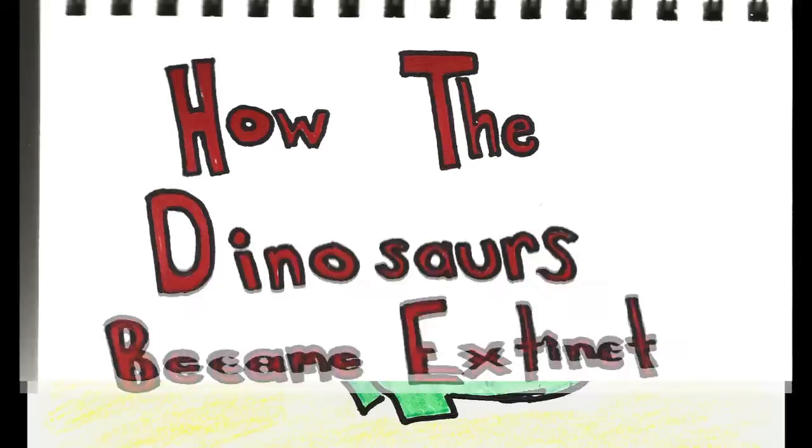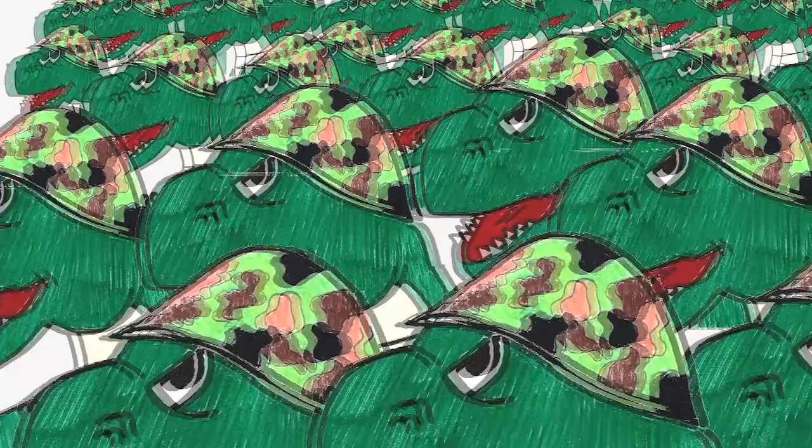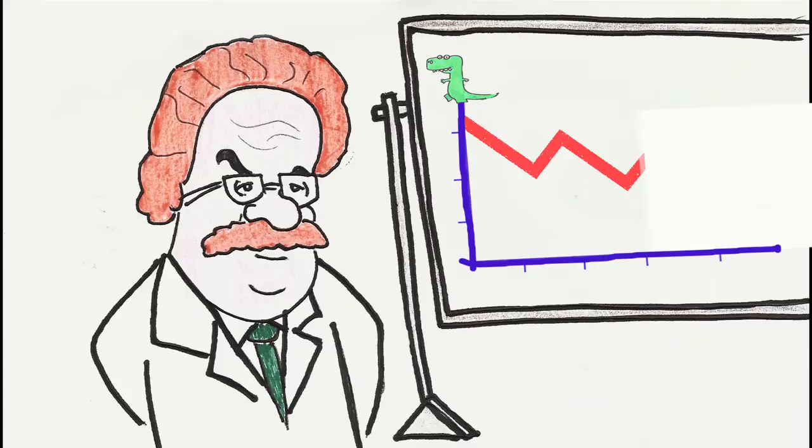The dinosaurs became extinct, maybe from a falling meteor, maybe from some big drastic war. Scientists will tell you, but it's just a guess how it came to be the end of the T-Rex and all the rest. Scientists will tell you, but they do not know.